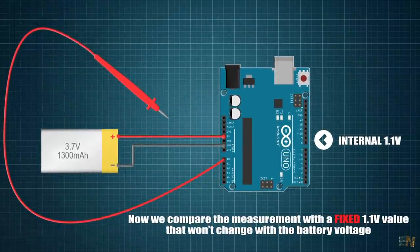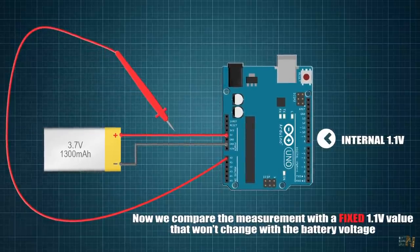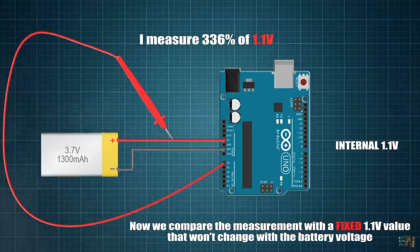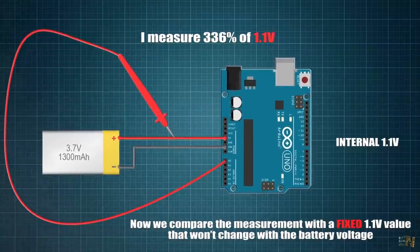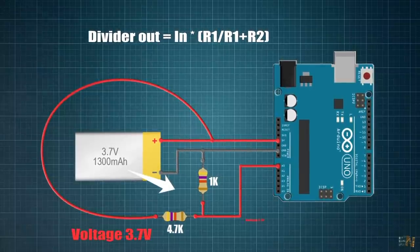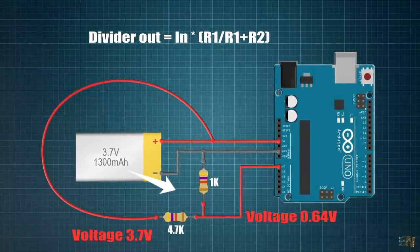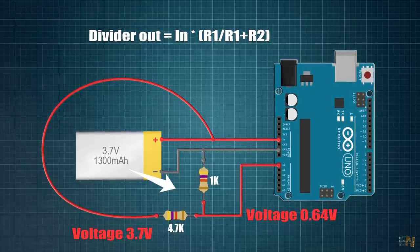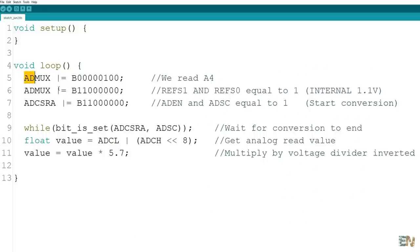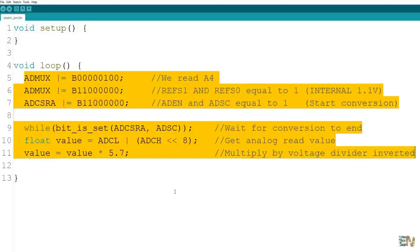But if I define in the code the ADC reference to be the fixed value of 1.1V, the voltage won't change its value with the battery. So now we could measure the battery voltage while supplying the Arduino with that same battery. All we have to do is to add a voltage divider from the battery to the ADC input in order to lower the voltage to below 1.1V because that is our maximum value if we use the internal reference.